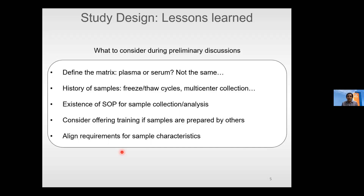If samples have not yet been collected, try to ensure they follow all the same procedures. If possible, consider offering training to personnel collecting and preparing samples, and try to align the requirements for sample characteristics that you need. We had experience discussing what we thought was a very simple concept — 'healthy controls' — and found that people define healthy controls in very different ways. Be sure the characteristics of the samples fit into the study that you and your collaborators have in mind.